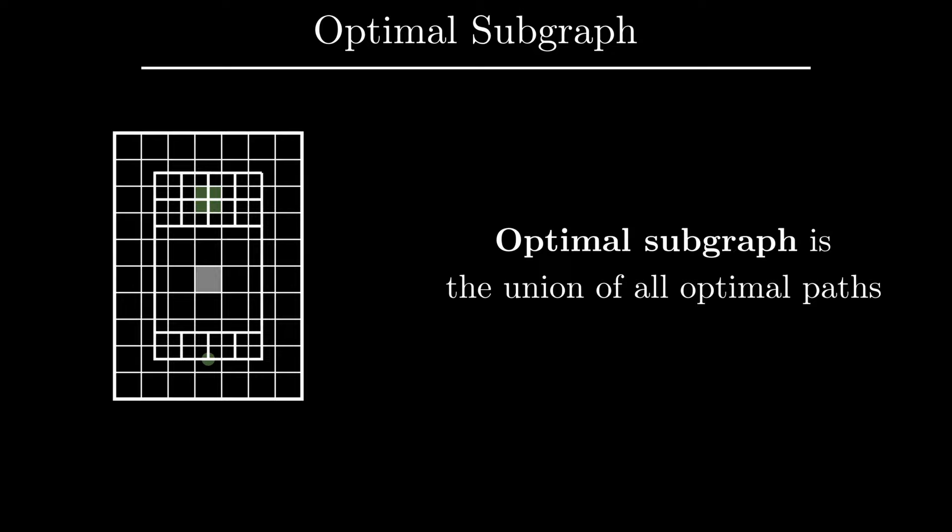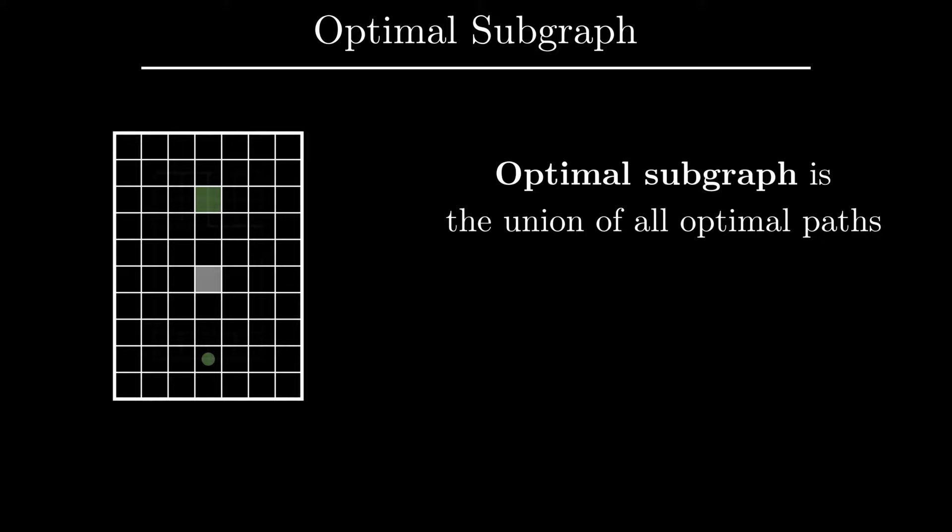When the graph is weighted by a cost monoid, we have a simple algorithm that finds the optimal subgraph. We begin by running the Dijkstra algorithm, but instead of stopping it once the goal is reached, we continue until all edges have been visited. This gives us cost to come. That is, cost of an optimal path from the root to the origin of the edge.